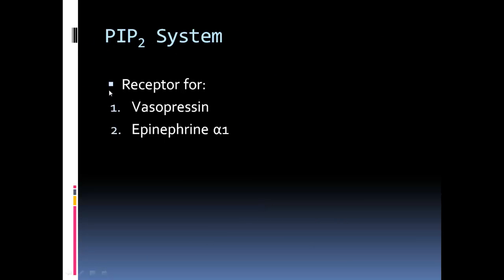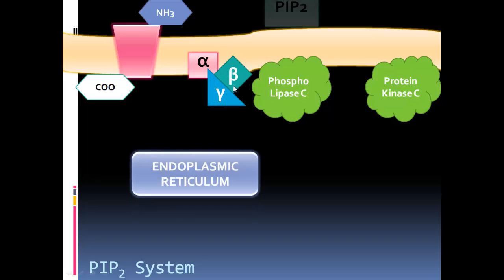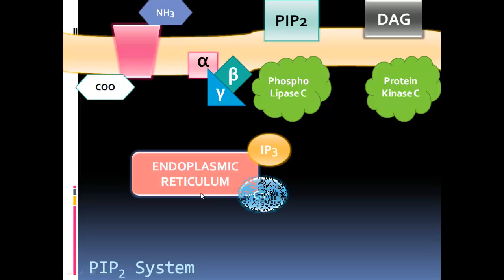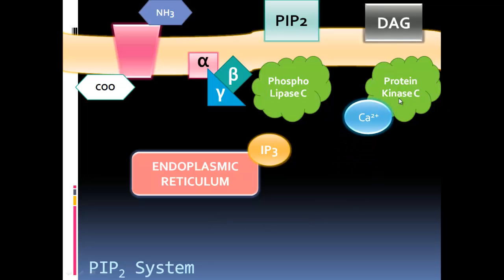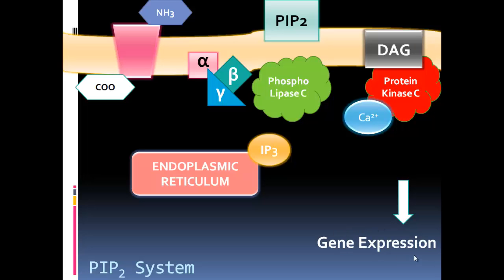The PIP2 system has receptors for vasopressin and epinephrine alpha-1. The alpha-beta-gamma subunit comes in; PIP2 is found in the membrane, and the endoplasmic reticulum is nearby. IP3 and DAG are produced. IP3 binds to the endoplasmic reticulum, causing calcium release. Calcium then binds to protein kinase C; diacylglycerol (DAG) also binds to this complex, fully activating protein kinase C, which leads to gene expression.